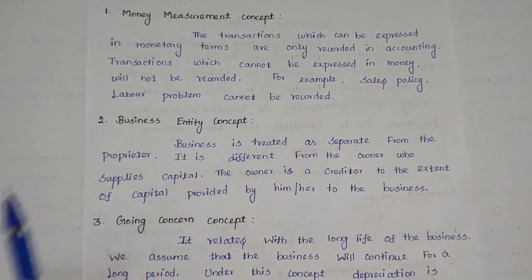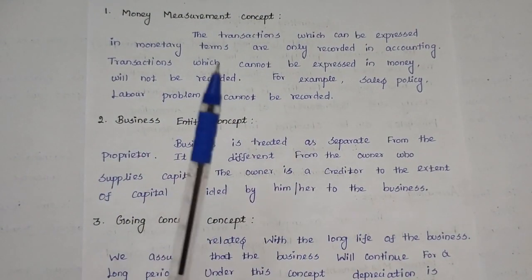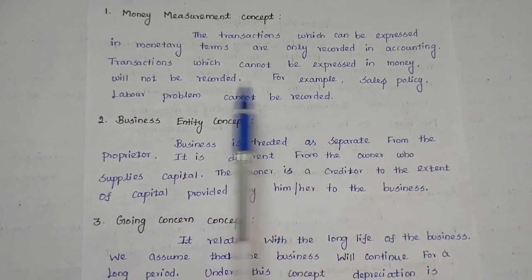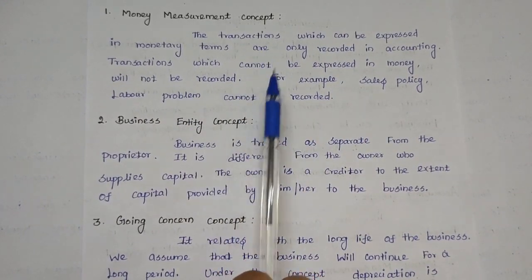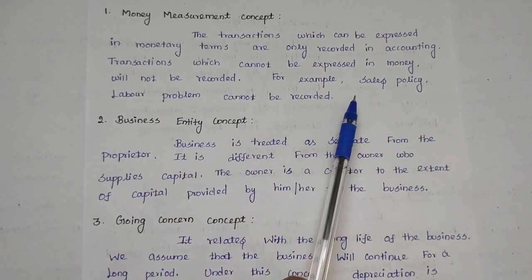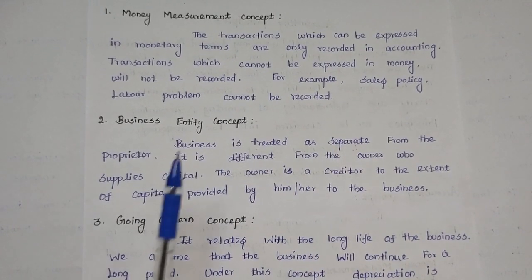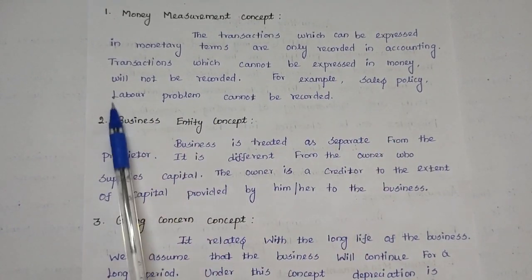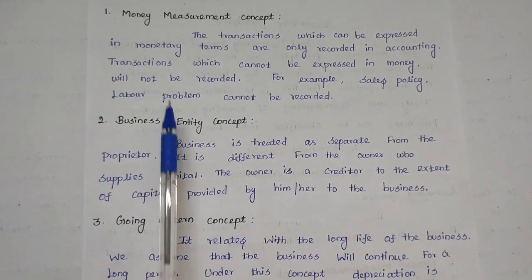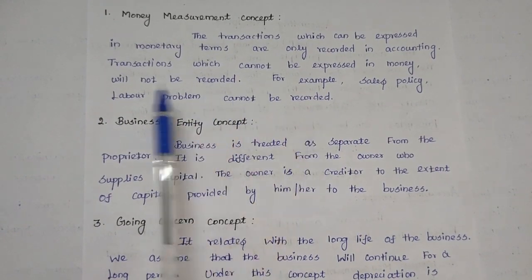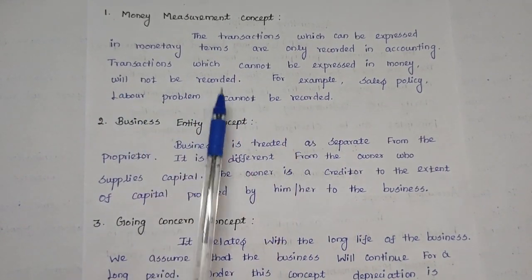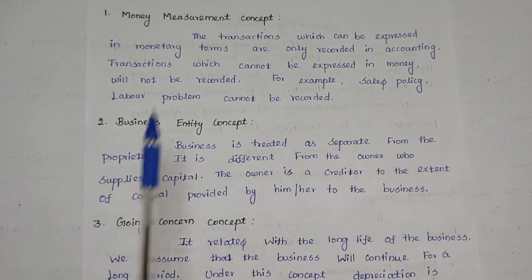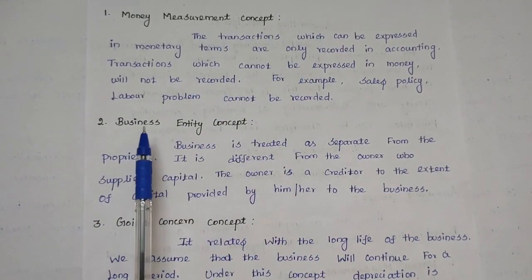Under the money measurement concept, only money-related transactions are recorded in accounting. Transactions that are not money-based will not be recorded in accounting. For example, sales policies and labor problems: a laborer's salary can be recorded in accounting, but a laborer's hard work or personal problems cannot be recorded. This is the money measurement concept.